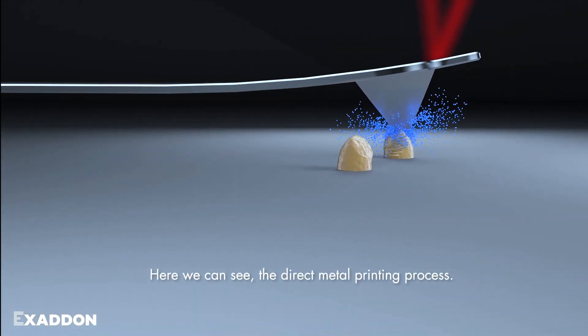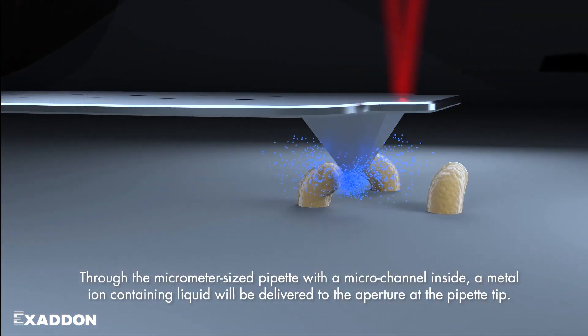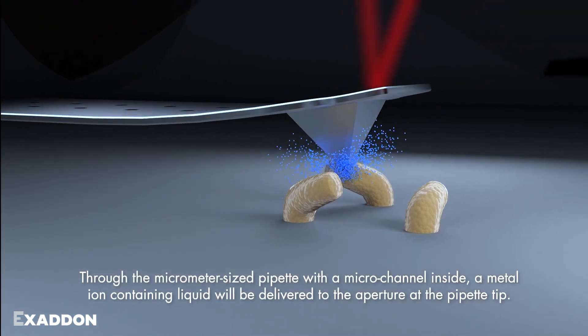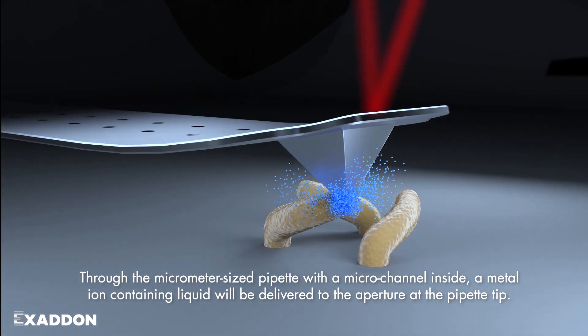Here we can see the direct metal printing process through the micrometer-sized pipette. With a micro channel inside, a metal ion containing liquid will be delivered to the aperture at the pipette tip.